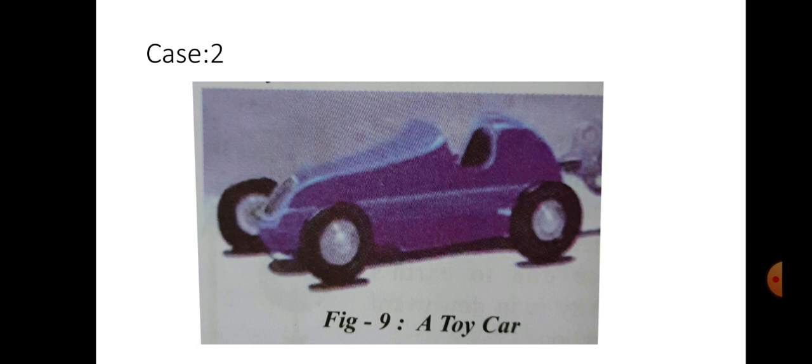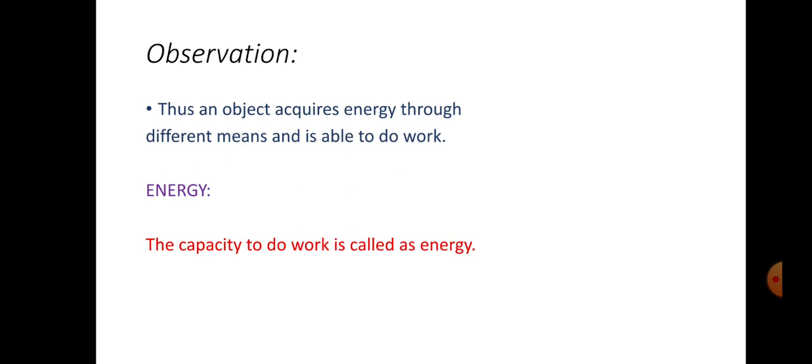You might have noticed that a toy car is at rest before winding the key but the same toy gets energy to move when the key attached to it is wound up. Before winding the key, the toy car will be at rest position. After winding the key, the toy car will be in moving position. In that way, any object acquires energy through different means and is able to do work.